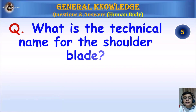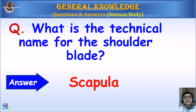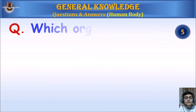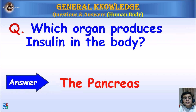What is the technical name for the shoulder blade? Answer: Scapula. Which organ produces insulin in the body? Answer: The pancreas.